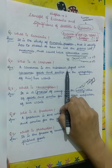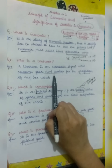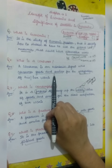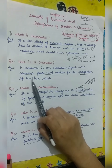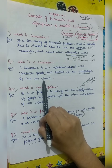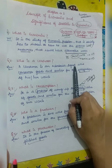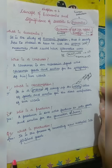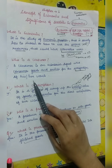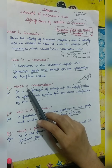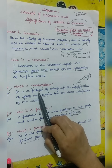Now, who is a consumer? A consumer is an economic agent — an economic agent who consumes goods and services. They use goods and services for the satisfaction of their wants, because when we consume, we get satisfaction. So a consumer is an economic agent who consumes goods or services.